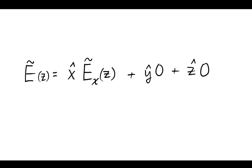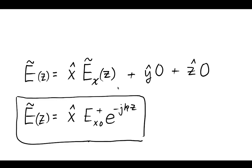The x direction of the electric field is a function of z, which is the direction the wave is traveling. Therefore, we arrive at the final solution for the electric field for a plane wave in lossless media: the electric field is directed only in the x direction on the x-y plane and travels in the z direction. In the next video, we will derive this for the magnetic field.